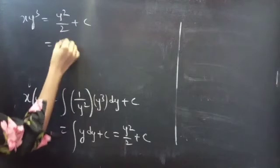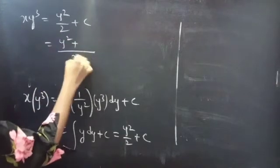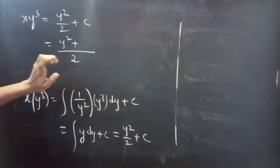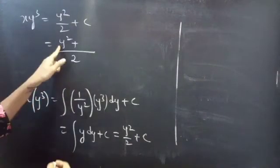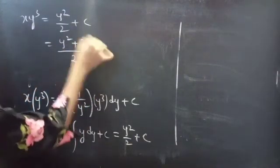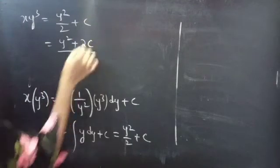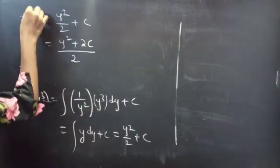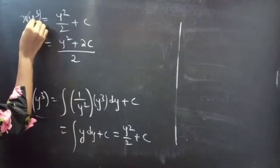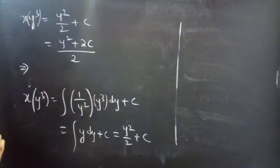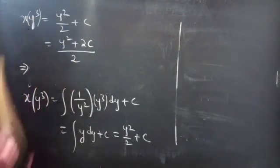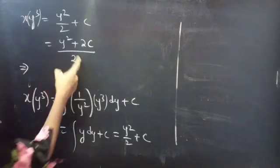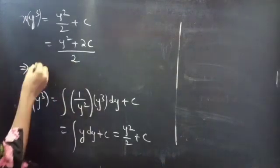So here we have x·y³ = y²/2 + c. Now take the LCM; 2 is your LCM here. In the numerator you'll get y² + 2c. Then take this y³ to the RHS and bring the 2 to the LHS.